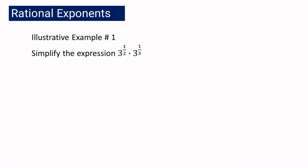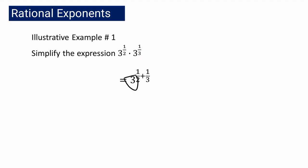Let us have example number one. We have 3 raised to 1 half multiplied by 3 raised to 1 third. As you can see here, we have two expressions with the same base with a rational exponent. Following the law of exponent, you are just going to copy the base 3 and you are going to add exponent 1 half and 1 third. That is why we have here 3 raised to 1 half plus 1 third.